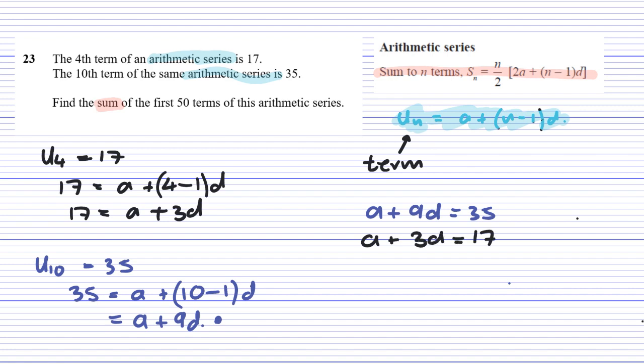We can do a subtraction and get A take away A, that cancels, 9D take away 3D gives me 6D, and 35 take away 17 is 18. So 6D is 18. D must equal 3. 6 times 3 is 18.